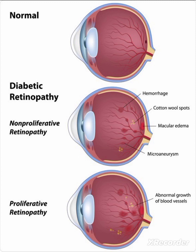Those are the two types of diabetic retinopathy: non-proliferative retinopathy and proliferative retinopathy. When observing with fundoscopy, you can see the abnormal growth of blood vessels.